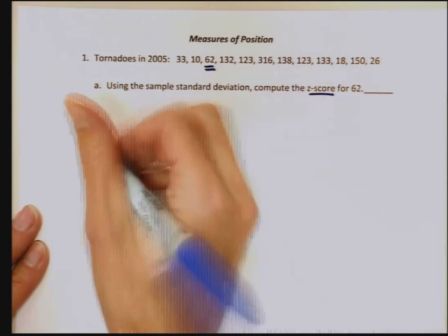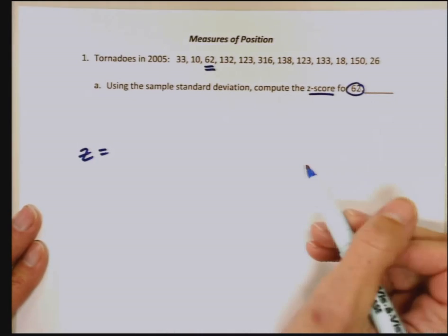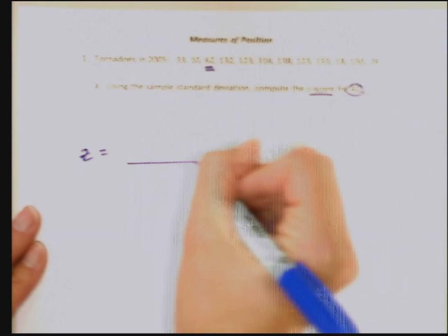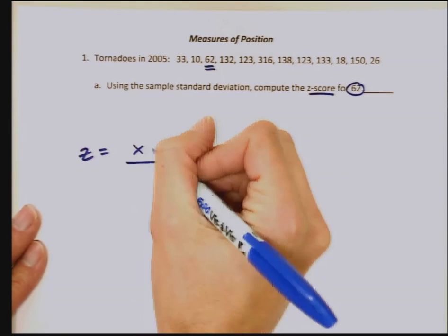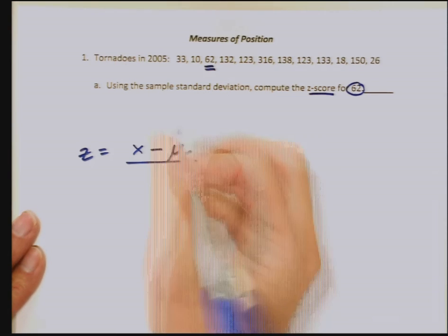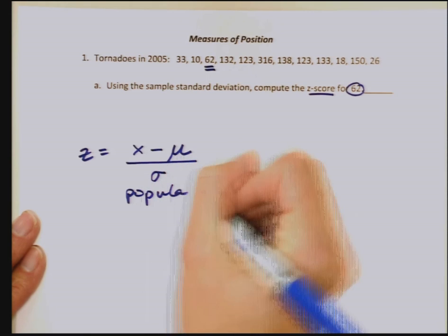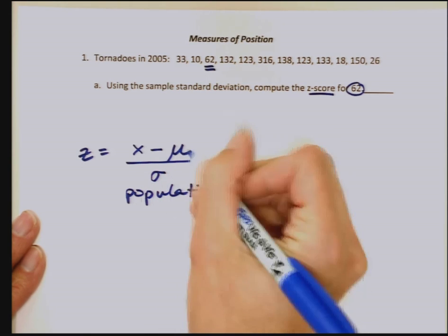I'll give you the formula for the z-score. The z-score compares the score of 62 to the mean. We want to take the raw score x minus the mean, so mu if I'm using population data, divided by the standard deviation. This is for population because of the symbols I'm using, mu and sigma.